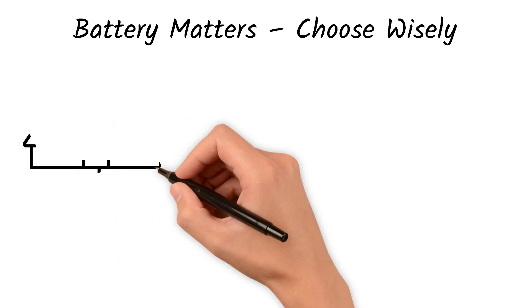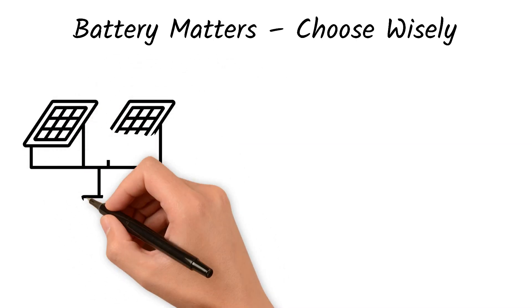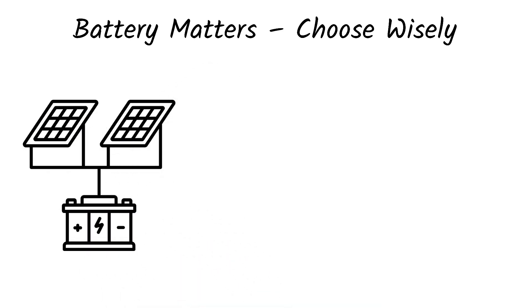Battery matters. Choose wisely. The battery is a key part of your off-grid system. In Kenya, most people go for either gel batteries. These are cheaper, maintenance-free, but offer a shorter lifespan.